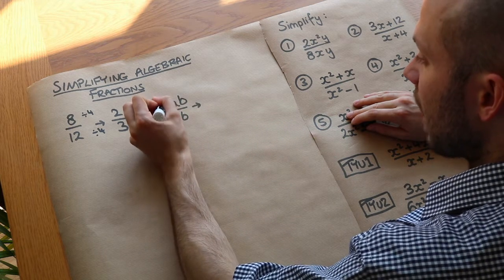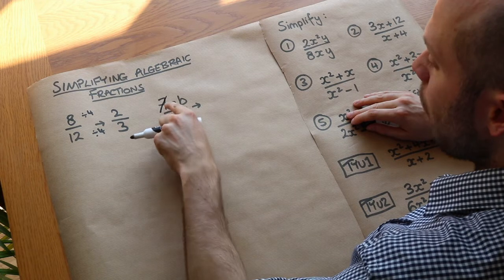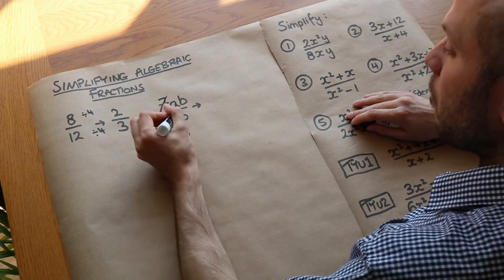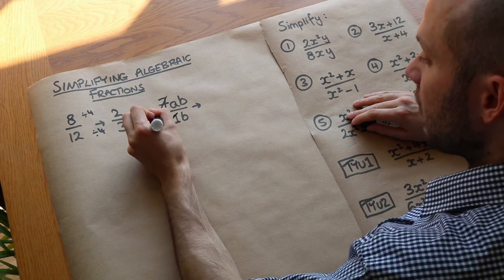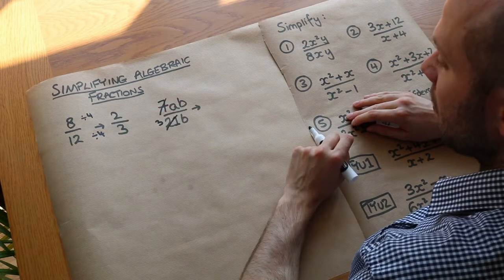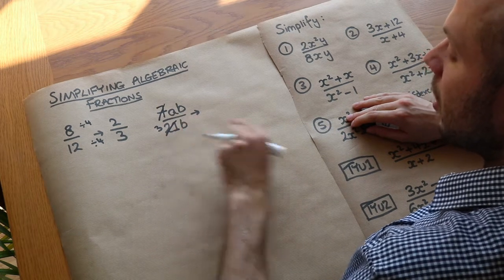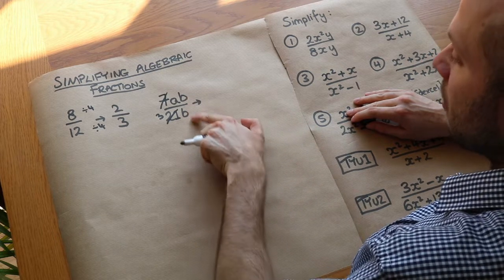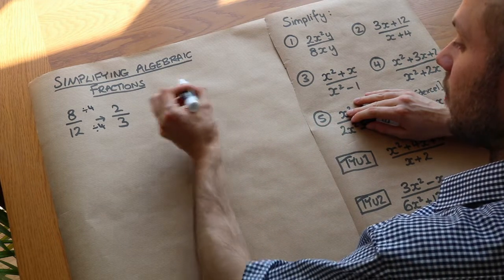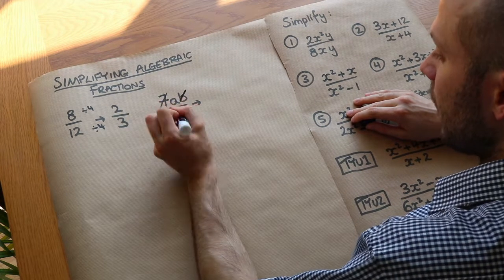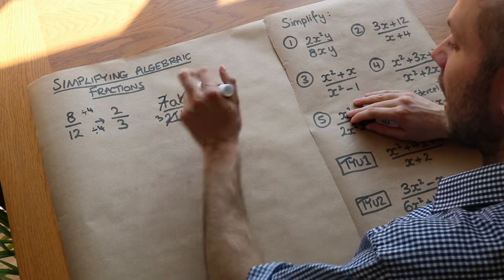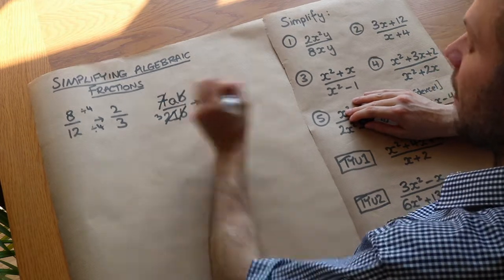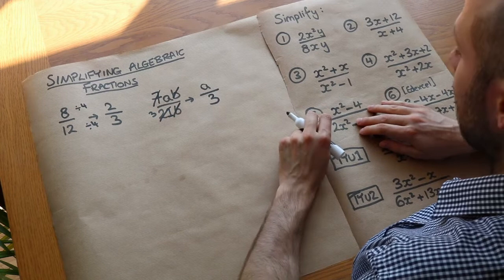So if I divide 7 by 7 I just get 1, and if you're just left with 1 you don't need to write anything at all, because 1ab is just ab. And then we can replace 21 with 3 because 21 divided by 7 is 3. Have we got an a common to the top and the bottom? No — there's only an a in the numerator so we just leave that. But do we have a b common to the top and the bottom? Yes, so we can divide top and bottom by b and just put a cross through it. Now all we're left with is an a at the top and 3 at the bottom, and therefore we've simplified the fraction.